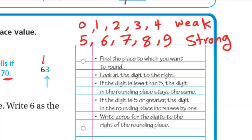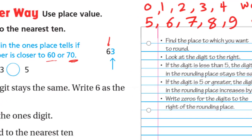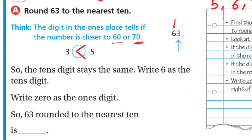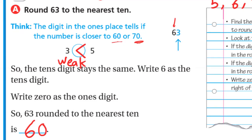If it's a strong digit — 5, 6, 7, 8, or 9 — the digit in the rounding place increases by 1, so the 6 becomes 7 and it will be 70. Here, the 3 in 63 is less than 5, so it's a weak digit. That means the 6 stays as it is, so we write 60. Anything to the right becomes zero.